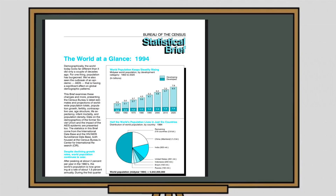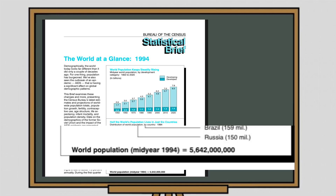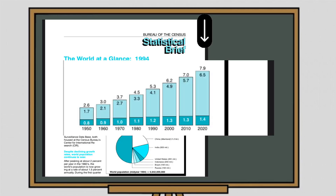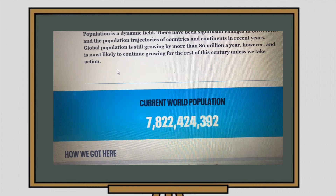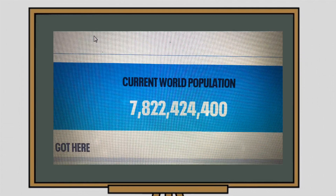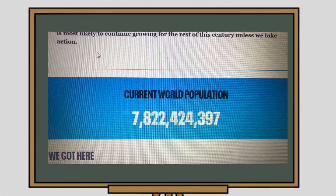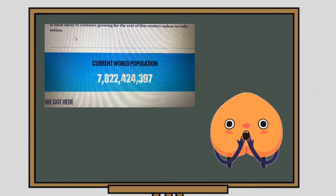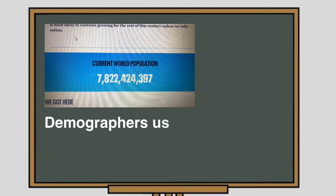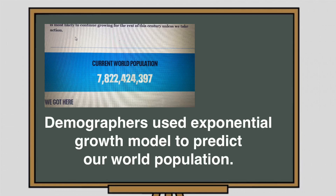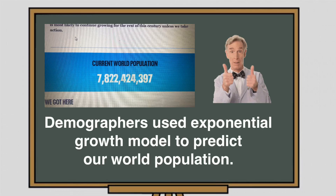According to a study entitled 'The World at a Glance, 1994,' conducted by the Bureau of Census, from a population of 5,642,000,000, the world's population was predicted to be about 7.9 billion in the year 2020. I checked the website of United Nations Population Projections and found out that the current world population is about 7.8 billion. That study was conducted 26 years ago, but with the use of the exponential growth model, demographers were able to predict our population today. See how amazing mathematics is?